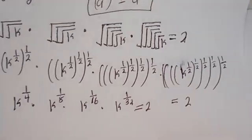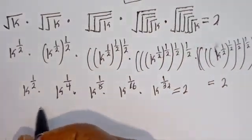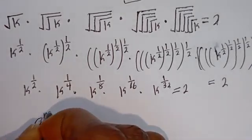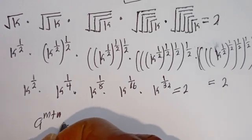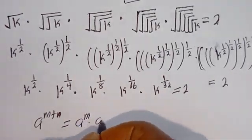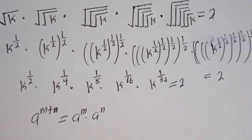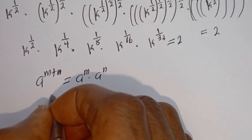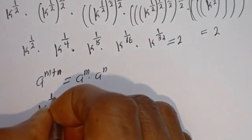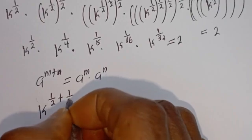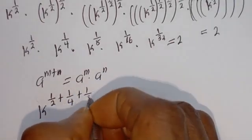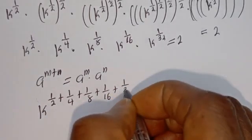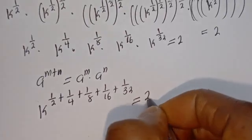Then, take note that if you have A to the power of M plus N, this is equal to A to the power of M multiplied by A to the power of N. So this can be written as k to the power of 1 over 2, plus 1 over 4, plus 1 over 8, plus 1 over 16, plus 1 over 32, is equal to 2.